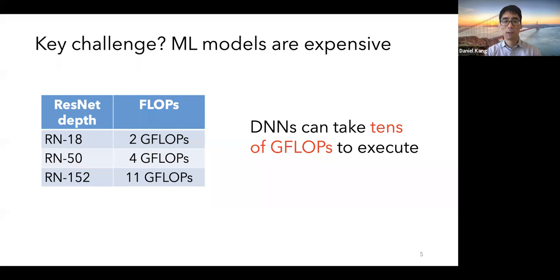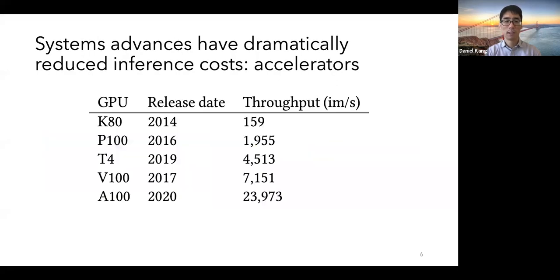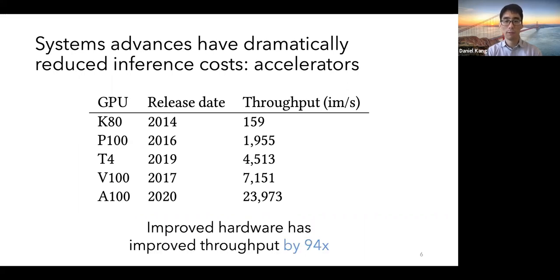However, over the past few years, systems advances have dramatically reduced inference costs, and what I'm showing here are accelerators. As we can see from 2014 to 2020, the throughput of executing ResNet-50 has increased from 159 images per second to nearly 24,000 images per second, which is an increase of throughput by almost 100 times.